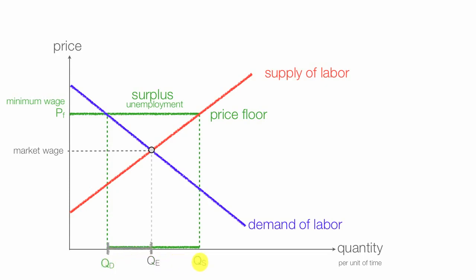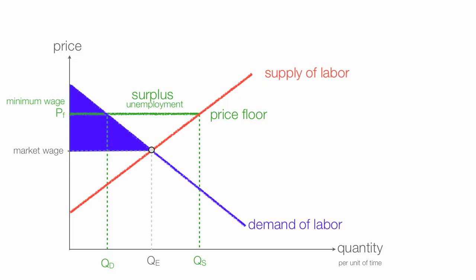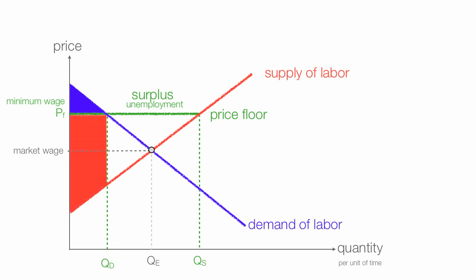The real loss is the workers who used to have jobs and no longer have jobs — that's the difference between the equilibrium quantity supplied and the new quantity demanded. Consumer surplus used to be the blue triangle. Keep in mind, that's businesses, because they consume labor — they're worse off, they have less surplus. But producer surplus, which are workers in this case, the workers who still have jobs are better off. There's a transfer of benefit from consumers (businesses) to workers.